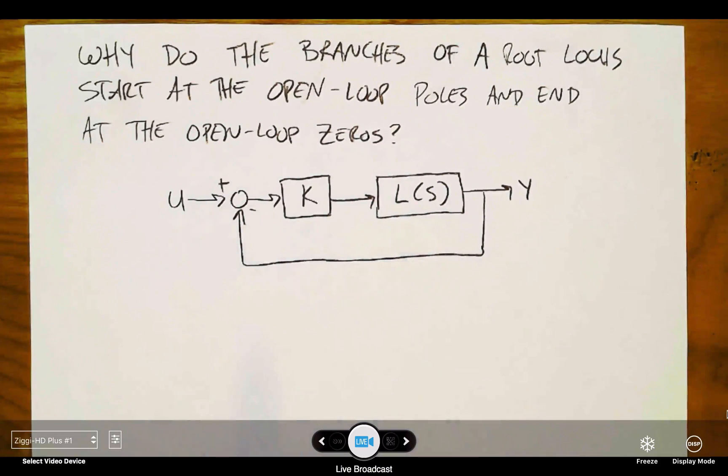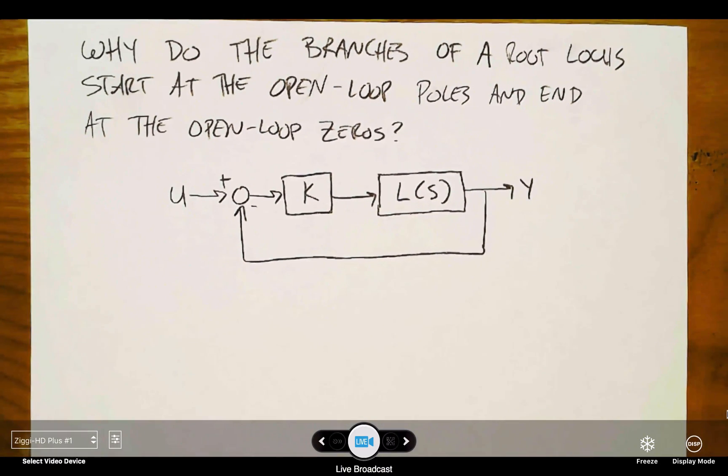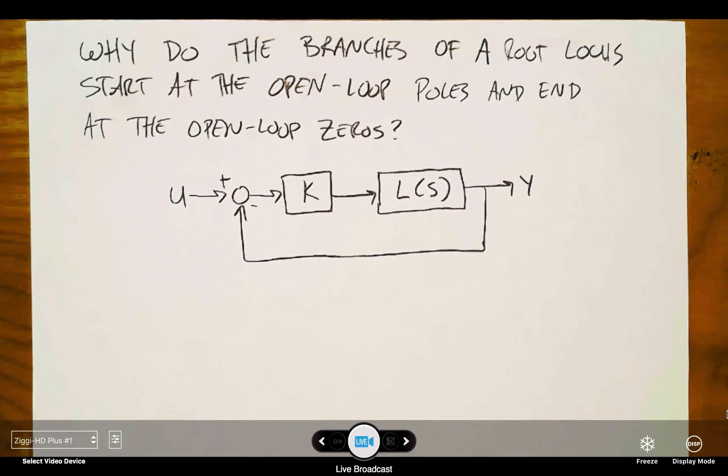And that gets said so often that you might be tempted to memorize it if it's not immediately obvious where it comes from. But my claim is that if you understand Root Locus, there's no need to memorize this because this is truly straightforward, once you understand where it comes from.